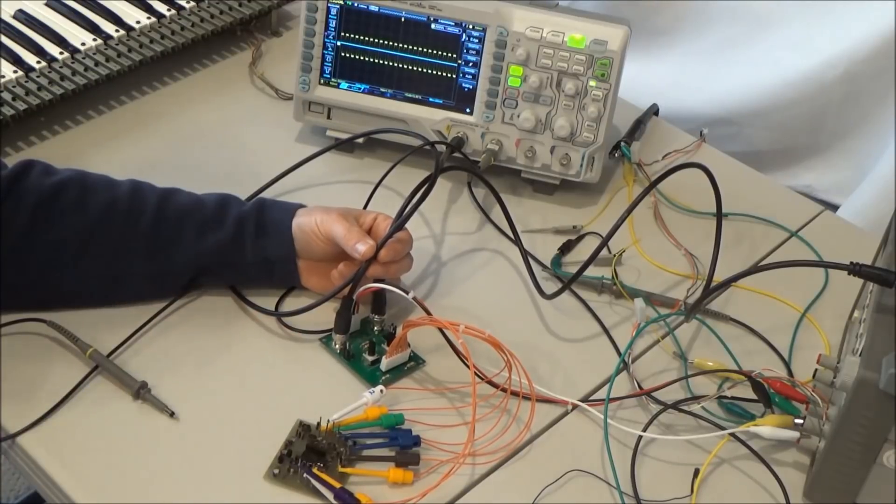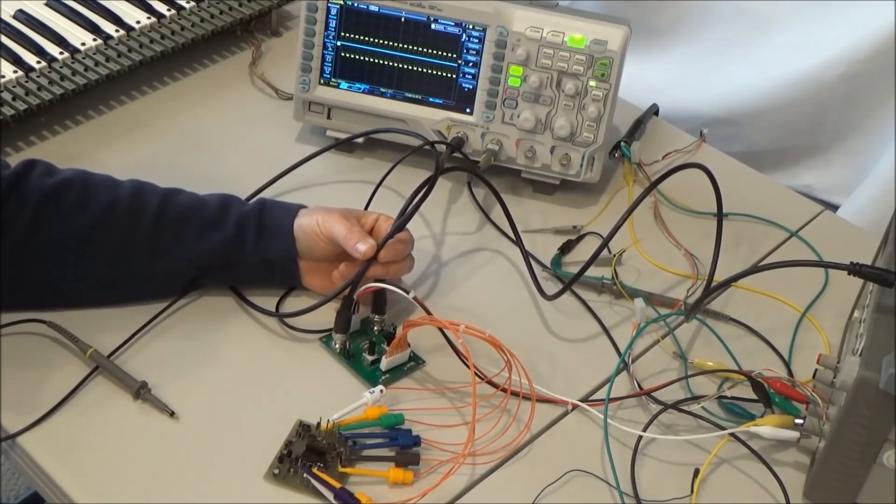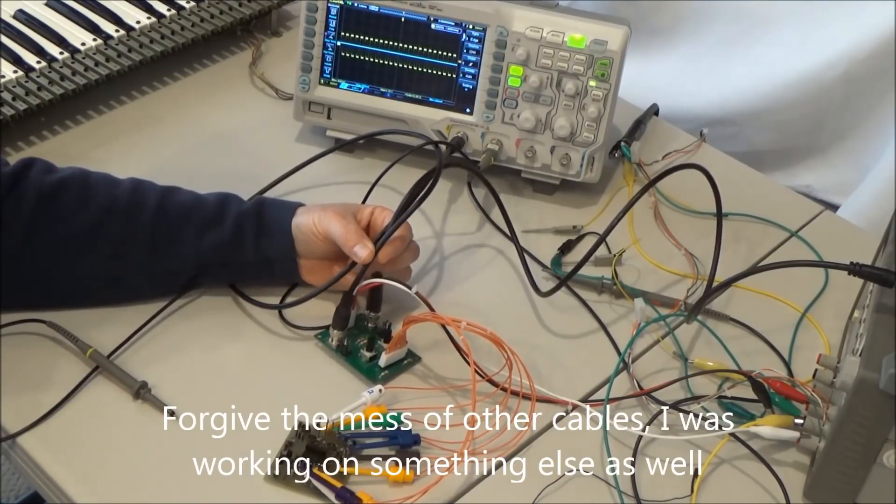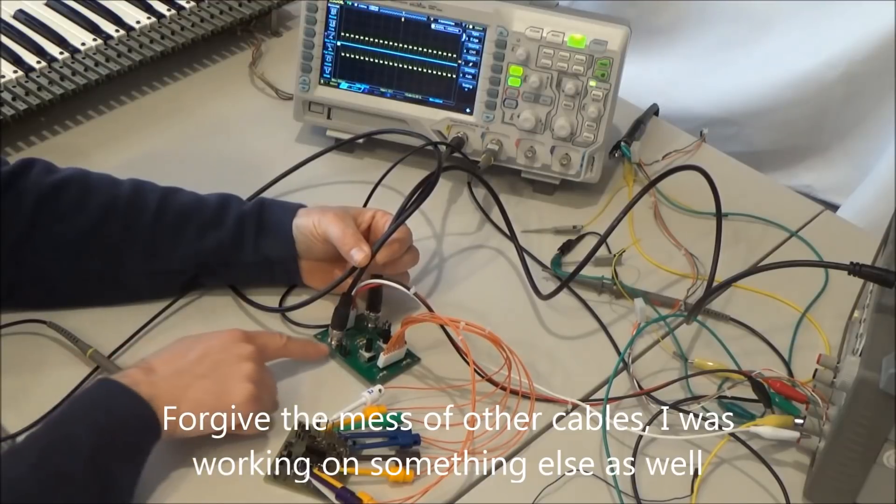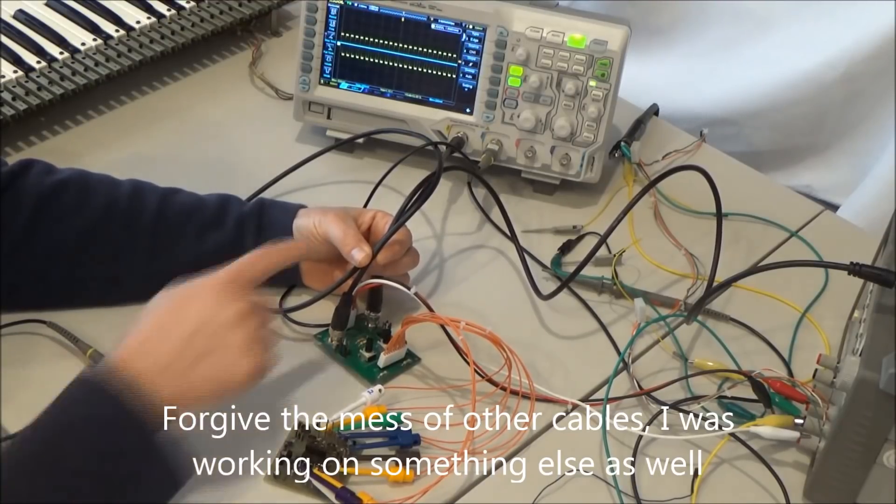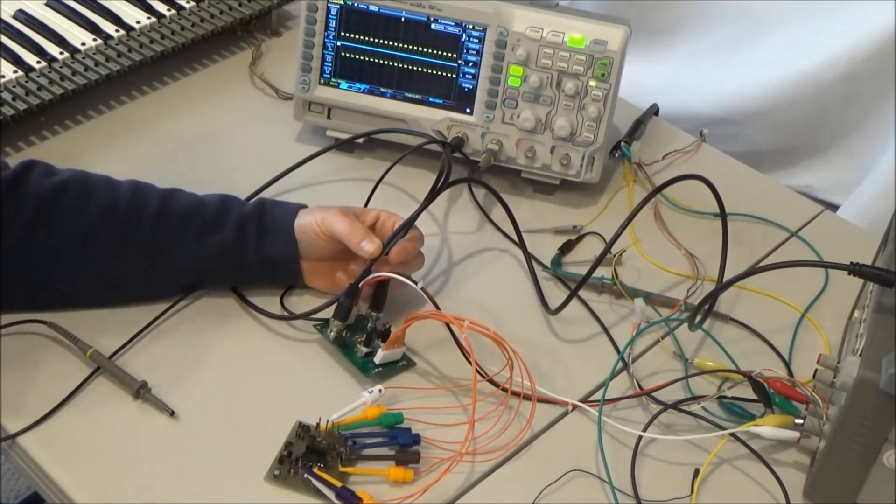This is the test fixture that I showed a few videos back. It allows me to hook up an ARP filter and fully test it outside a synthesizer. In that last video I demoed it with some working filters, but today we're going to use it to fix this broken filter. And since that last video I got my BNC jacks in and I now have my scope and signal generator connected directly with BNC cables.